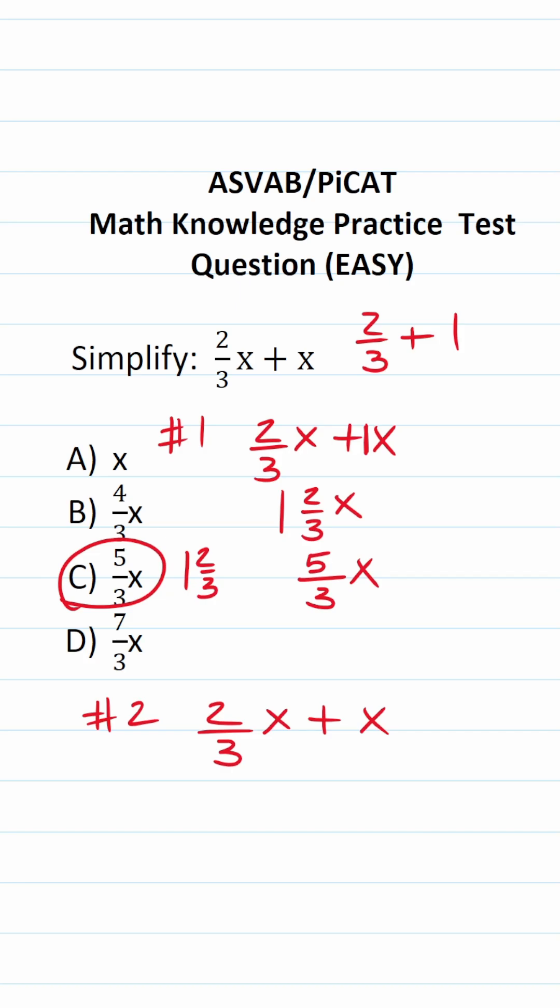Another way to solve this one is by adding the fractions. Again, most people would say there's a coefficient of one in front of this x. So let's disregard the letter variables x for a second. This becomes two-thirds plus one.